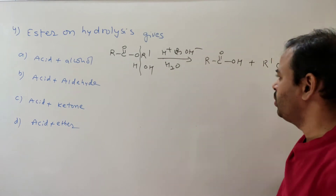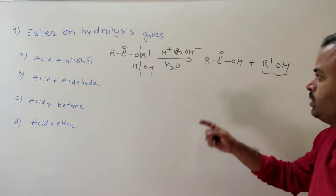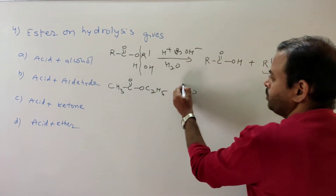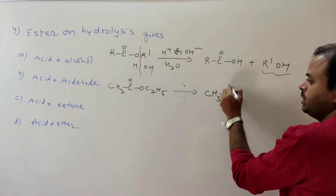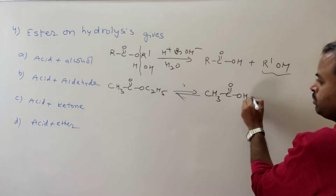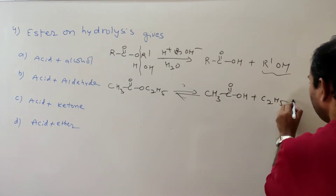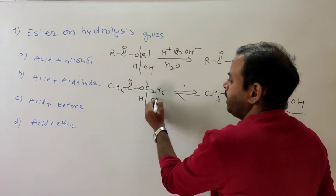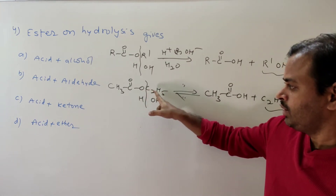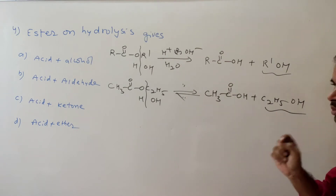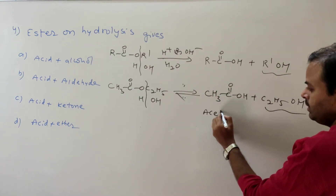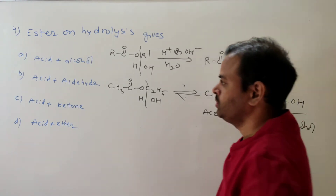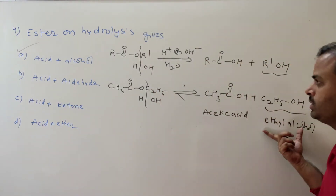The oxygen-attached alkyl group converts into alcohol — remember that. For example, CH3COOC2H5 on hydrolysis under acidic or basic conditions (a reversible reaction) gives CH3COOH plus C2H5OH — acetic acid and ethyl alcohol. The alcohol must have the ethyl group, because the oxygen-containing alkyl group converts into alcohol. So the answer is option A: acid plus alcohol is formed by ester hydrolysis.